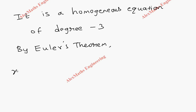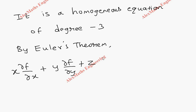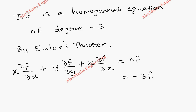Therefore, by Euler's theorem we can say x times ∂f/∂x plus y times ∂f/∂y plus z times ∂f/∂z equals n times f, and the value of n is minus 3, so it equals minus 3 times f.